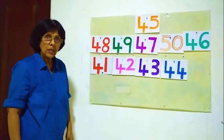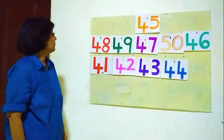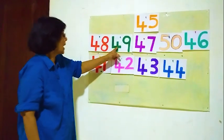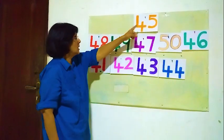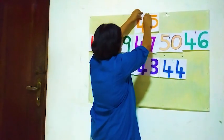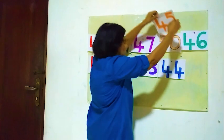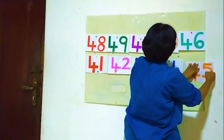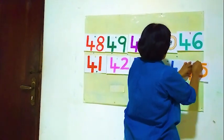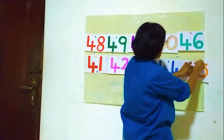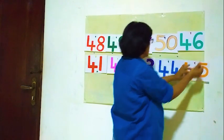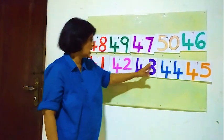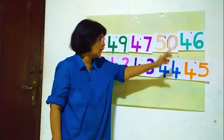After 44, 45. Where's 45? Here 48, 49, 45 — here 45. We'll put it here: 45. Now: 41, 42, 43, 44, 45.